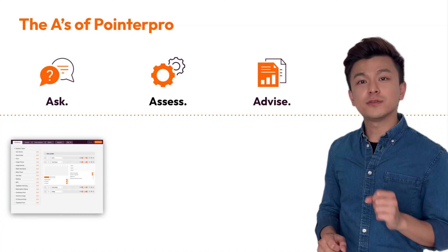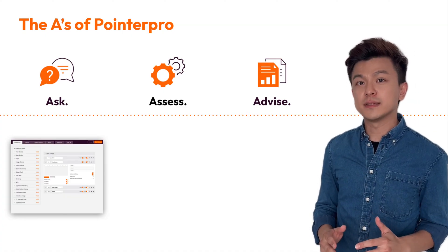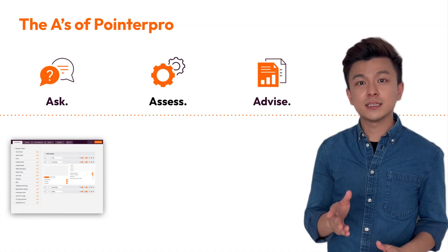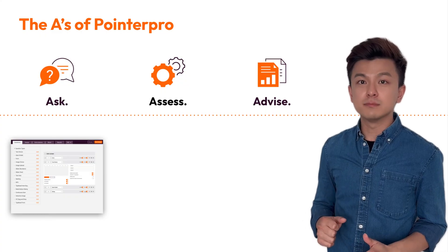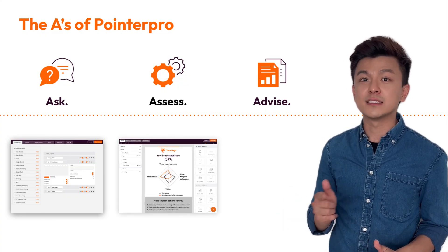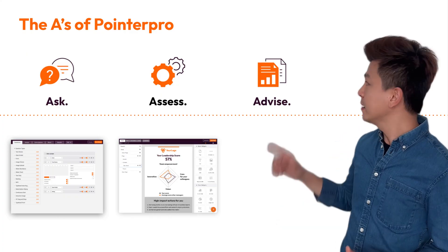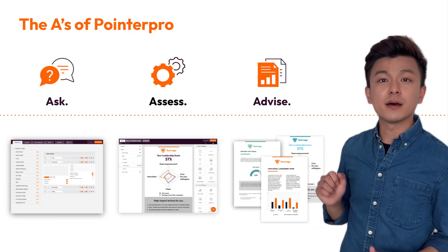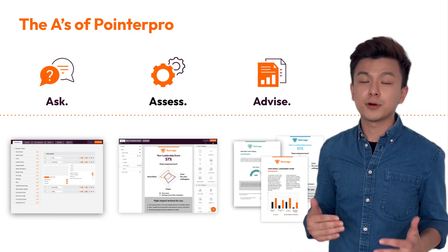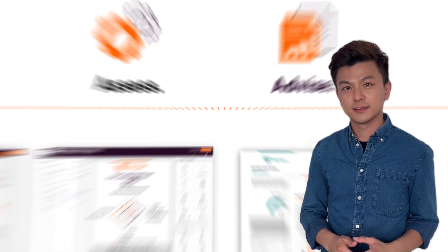First of all: Ask. Using the assessments that you build in Pointerpro, you ask your respondents multiple questions and then you assess them in different aspects. At the end, you can give them advice in the auto-generated personalized PDF report.